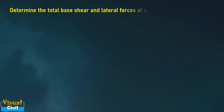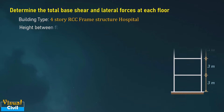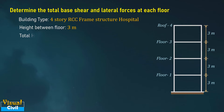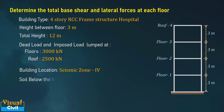Consider a four-story RCC frame structure — a hospital building having floor-to-floor height equal to 3 meters. The total dead load and imposed load lumped at each floor is 3000 kilo-newton, while that on the roof is 2500 kilo-newton. The building is located in seismic zone 4 and the foundation soil type is hard rock.